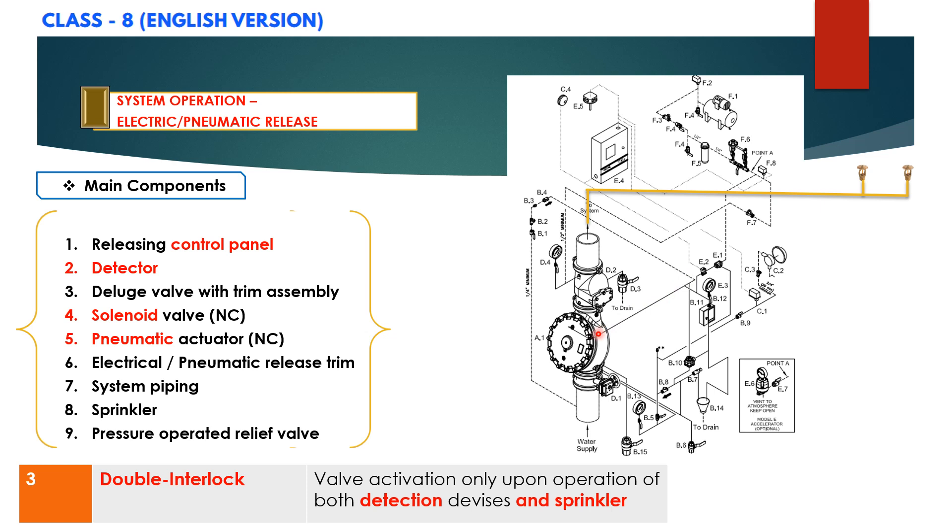this line is connected on the deluge valve priming chamber. In the set condition, water supply pressure is trapped in the priming chamber by check valve B4 and both electric actuator, which is normally closed E2, and normally closed pneumatic actuator.